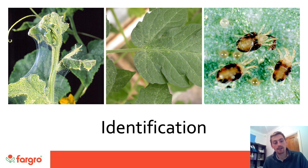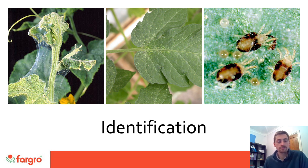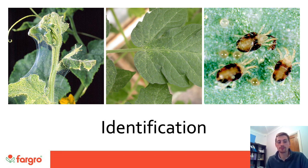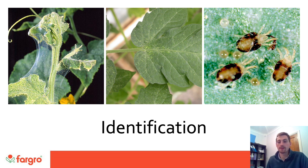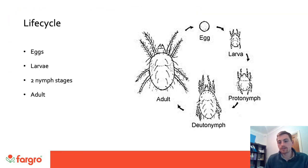You can see the adults crawling across the webbing. This creates a real issue at this stage for biologicals as well as a spray program. For predatory species such as Amblyseius, there is difficulty in crawling across this webbing, and for a spray program it can be quite difficult to penetrate through to actually reach the colonies and have effective control. It's really important that preventative measures are carried out before you reach this stage — putting in your biologicals early as the spider mites are still in or coming out of diapause, before this webbing stage.